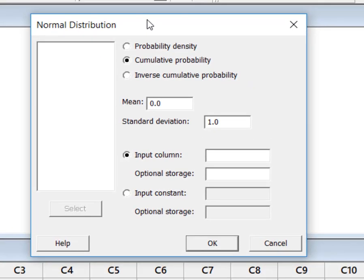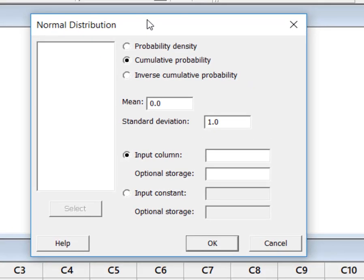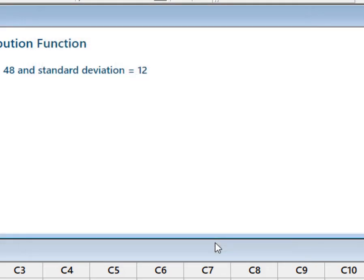It's going to give me a dialog box. Because I want the probability of less than 20, I know that I need this cumulative probability. We were given that the mean was 48 minutes and the standard deviation was 12. If you recall on my curve, I had located X equal to 20, and I want the probability of less than 20. So I'm going to type in my input constant of 20, and now I'm going to say okay.